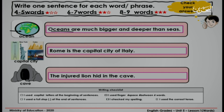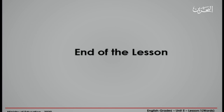Oceans are much bigger and deeper than seas. Rome is the capital city of Italy. The injured lion hid in the cave. Did you check all the boxes? I'm sure that you did. Good job! This is the end of our lesson today. I hope that you enjoyed it. See you soon!